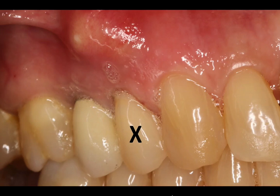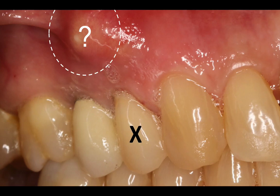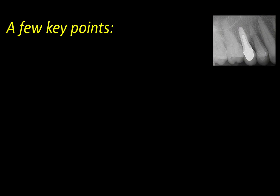I recommended having the tooth extracted and replaced with an implant. My preference in situations where there's a lot of infection, pus, and drainage is to go for delayed placement. This allows the infection to heal, allows me to rebuild the site, and create better bony architecture to place an implant later on.